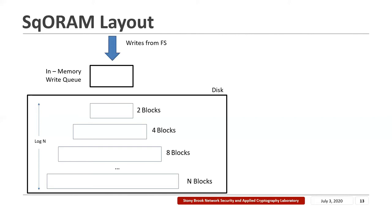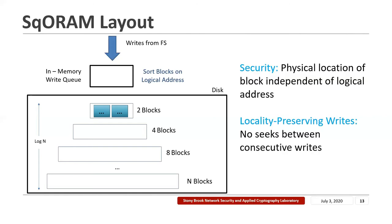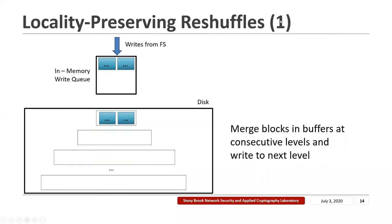SQORAM also has an in-memory write queue for performing operations that will be hidden from the adversary. For a write of two blocks of data received from the file system, first you sort these blocks on their logical addresses, and then you write them to the top-level buffer. The physical location of the blocks are independent of their logical addresses because they are always written to the top level. This mechanism ensures locality-preserving writes, because when the write queue is flushed, no seeks are incurred between consecutive writes. When two more blocks are added to the write queue and the top-level buffer is full, we need to make space before the write queue can be flushed to disk.